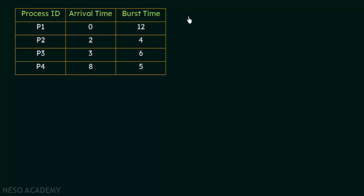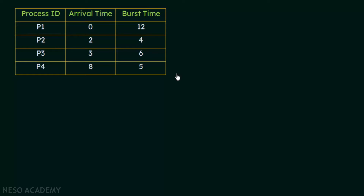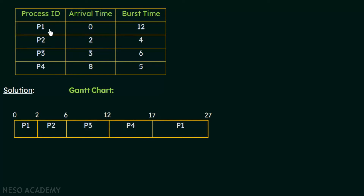To solve the problem we first form the Gantt chart for the four processes. The first process to arrive was P1 at time 0. Since it was the first process and no other processes existed at that time, the CPU was given to P1. In the Gantt chart, P1 arrives at time 0 and begins its execution.